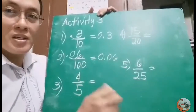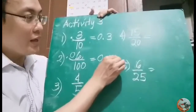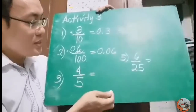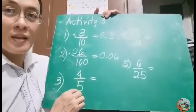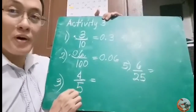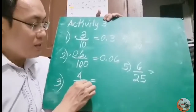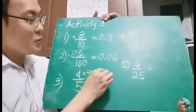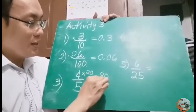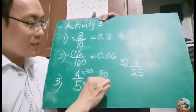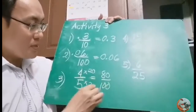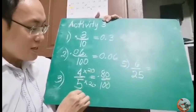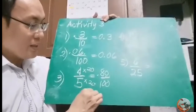You read the number and then indicate the place value: tenths, hundredths — 6 hundredths. Now for 4 fifths, make it a power of 10. Multiply the denominator 5 by 20 to get 100, and multiply the numerator by 20 as well. 4 times 20 equals 80, and 5 times 20 equals 100. In decimal form, move 2 places to the left since there are 2 zeros. The answer is 0.80, or 80 hundredths.